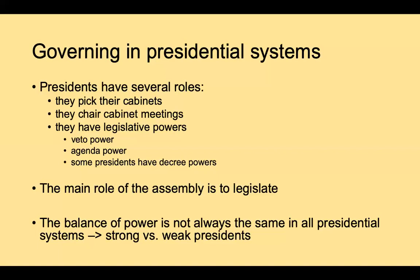The legislature is the main organ involved in legislating — creating and passing bills that will then be reviewed by the president. Theoretically they don't have to review it at all, but in the United States if they don't after a certain period, it's essentially vetoed. The balance of power is not always the same in all presidential systems. What we mean by strong versus weak presidents is that because they're independently elected, they might not actually have a legislative majority in Congress.